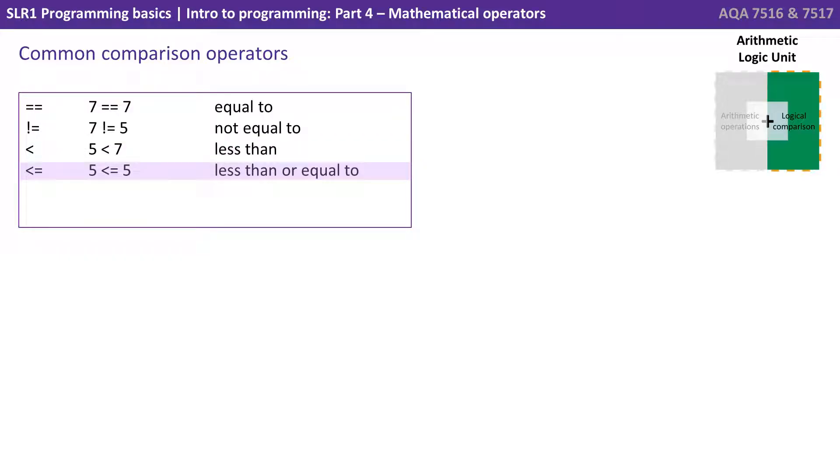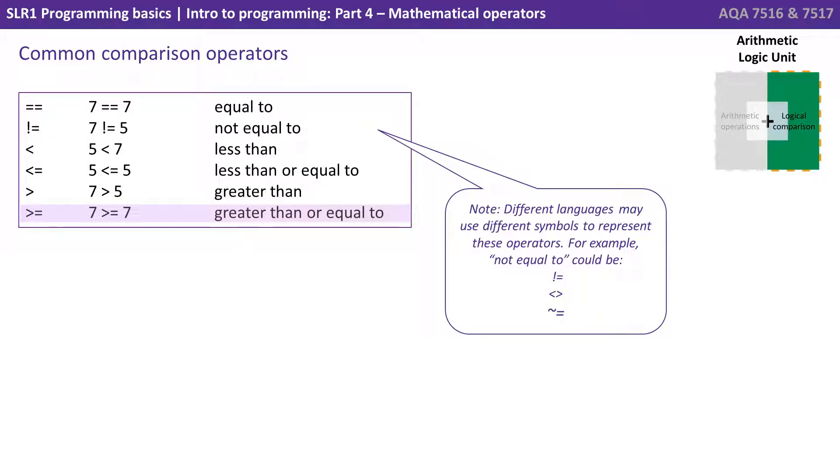We have less than or equals to, greater than, and greater than or equals to. Now note, different languages may use different symbols to represent these operators. For example, not equals to can in one language be the exclamation mark followed by equals, can be a less than or greater than symbol, there are various different formats.